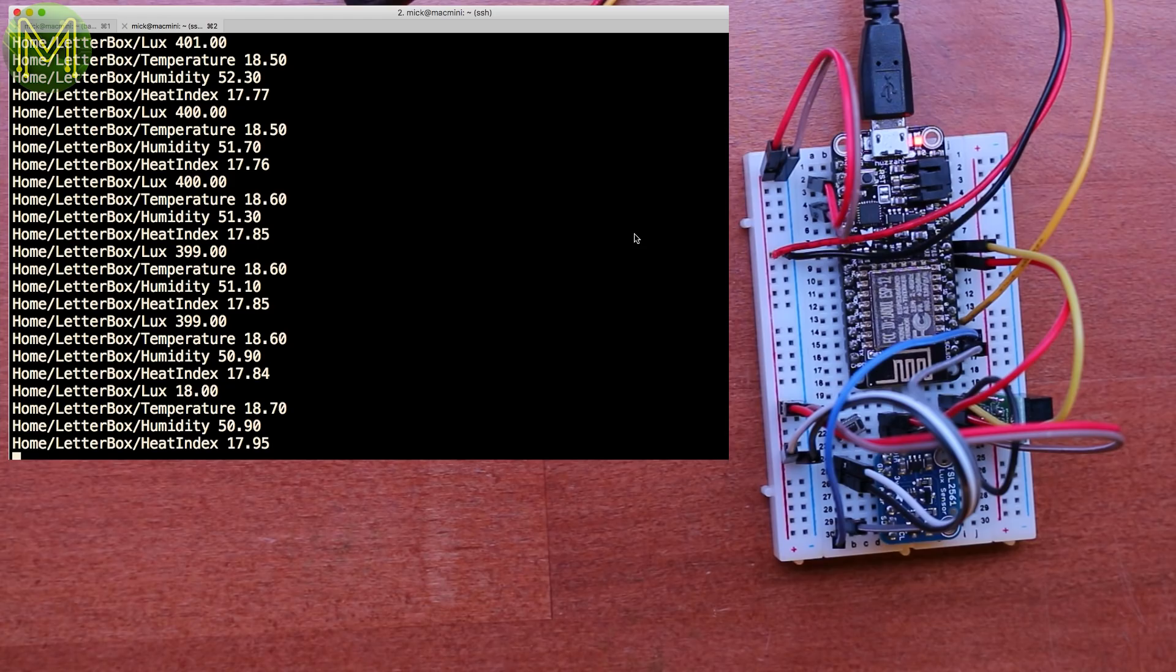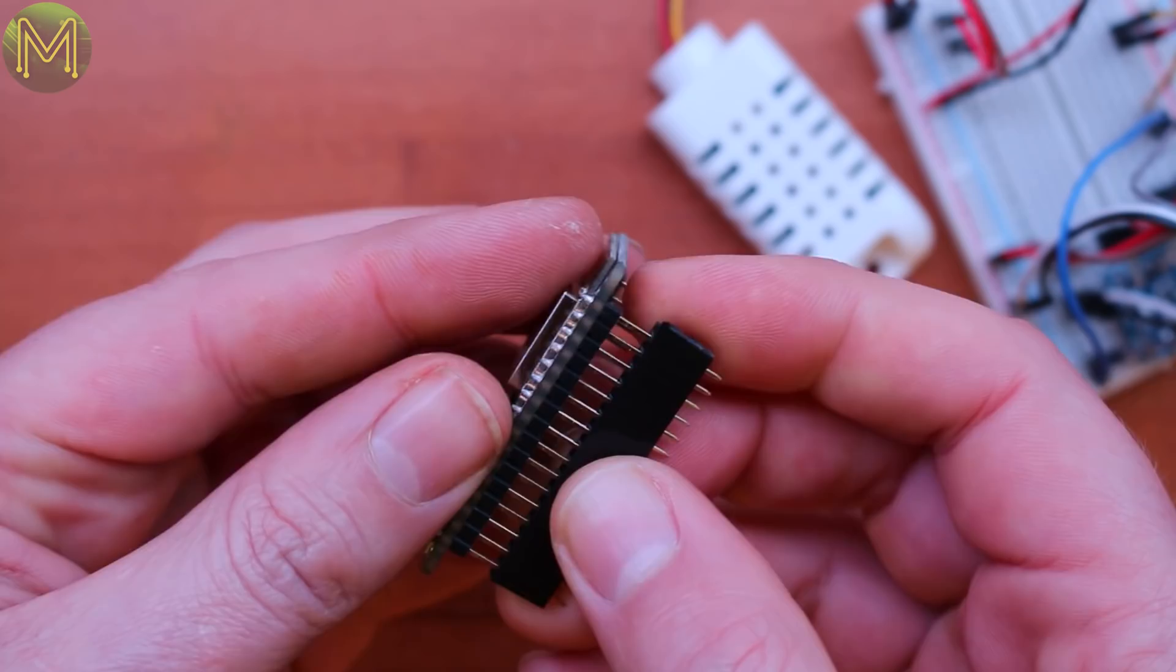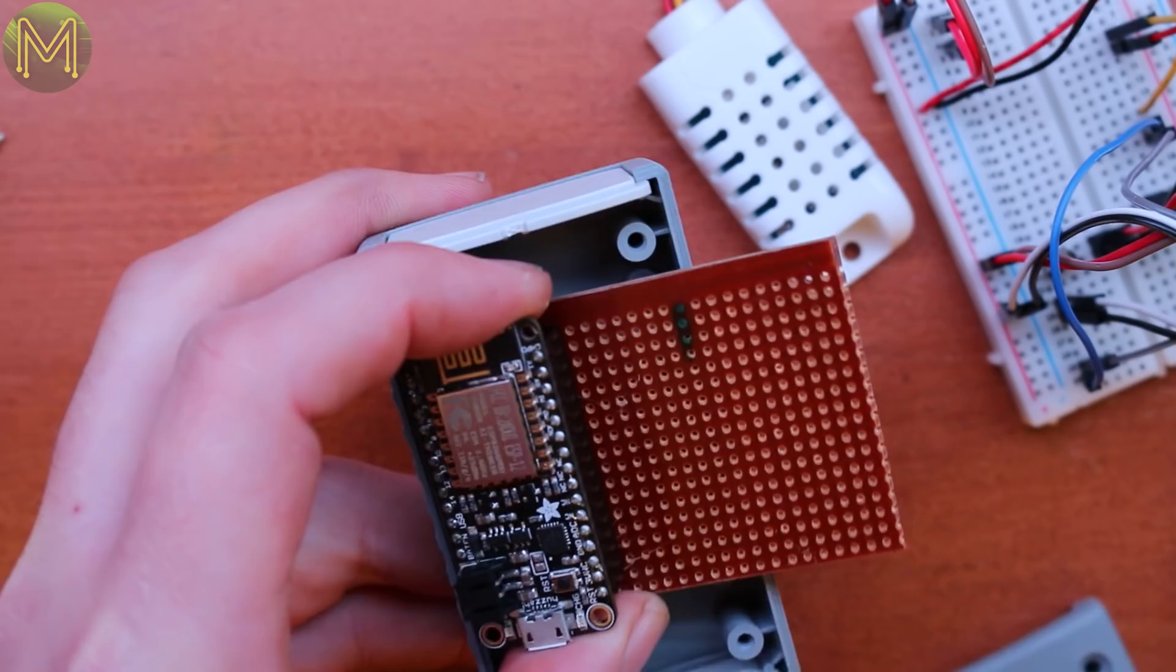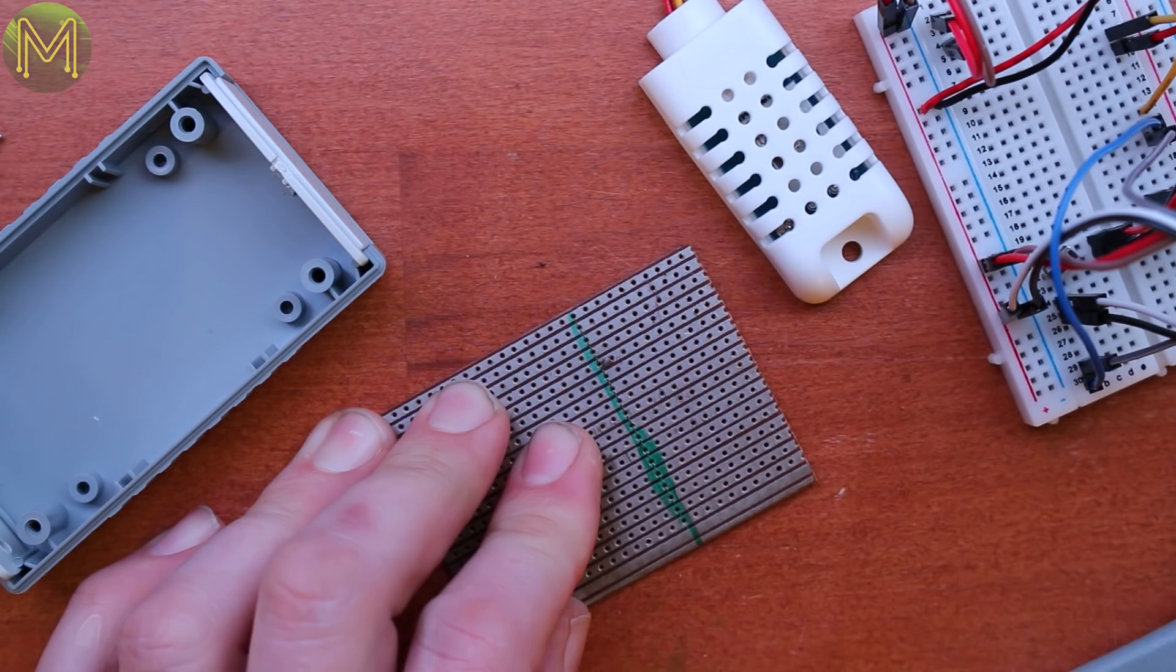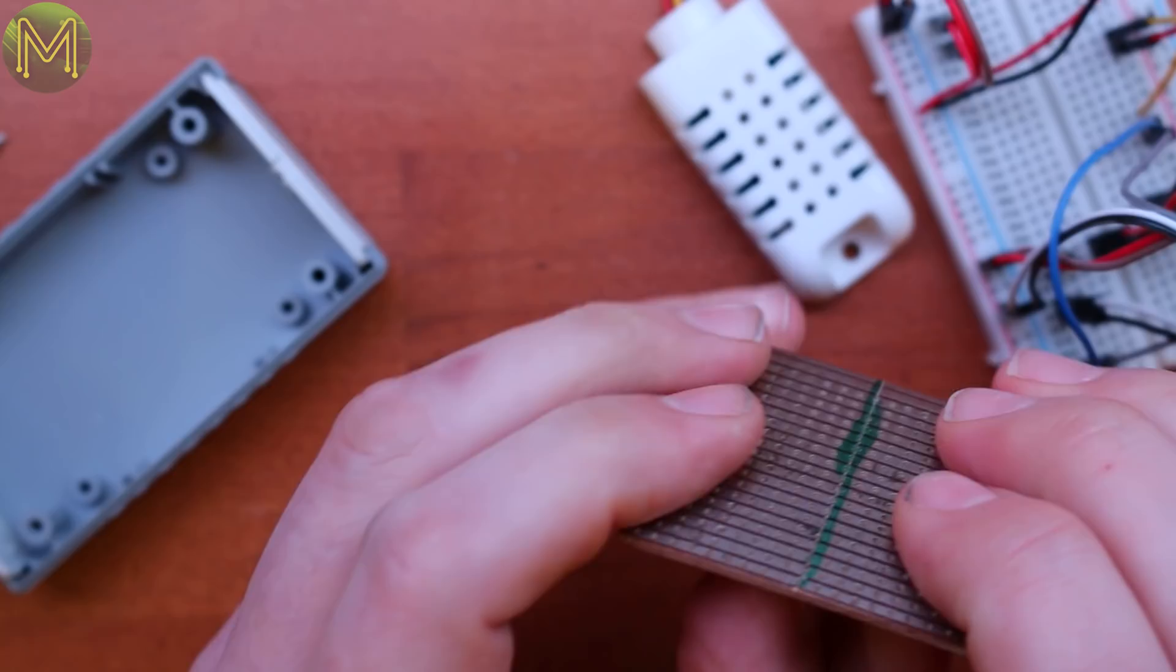Now that everything is running on the breadboard, time to make it more permanent. I always like using these header blocks, because then I can reuse components from older projects, instead of soldering everything up permanently to the stripboard. I found a decent case that I thought would fit everything in, so I cut the stripboard down to size. It's pretty easy to do this. Just mark out where to cut. You know the old saying, measure twice, cut once. Score the board with a knife, and just snap it in two.